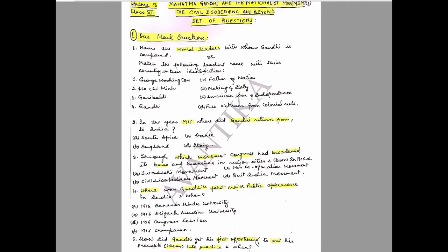Question 3: Through which movement did Congress broaden its base and branches in major cities and towns in 1905-06? Options: A) Swadeshi Movement, B) Civil Disobedience Movement, C) Non-Cooperation Movement, D) Quit India Movement. Choose the correct option.